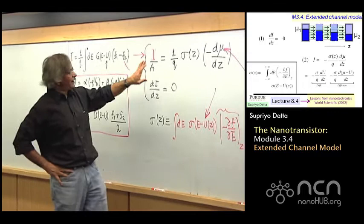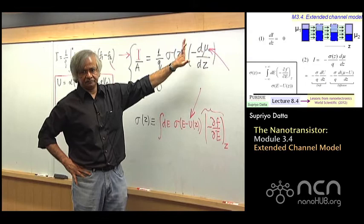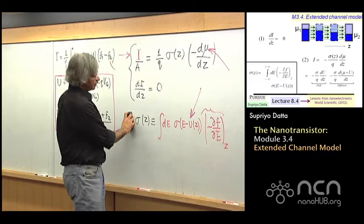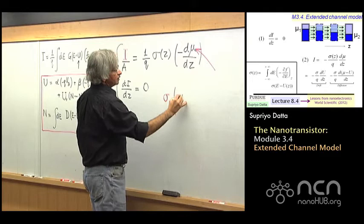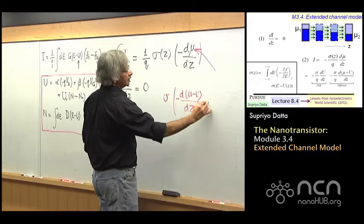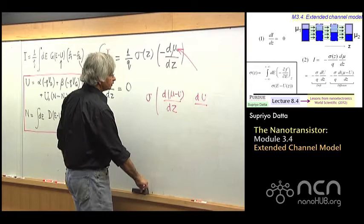One point I'd like to mention again is that finally the current really depends on the slope of the electrochemical potential. And sometimes in the usual literature, the way people think of it is that it is divided into two parts. You see, sigma × d mu / dZ, you'd write it as sigma × [d(mu minus U)/dZ minus dU/dZ].